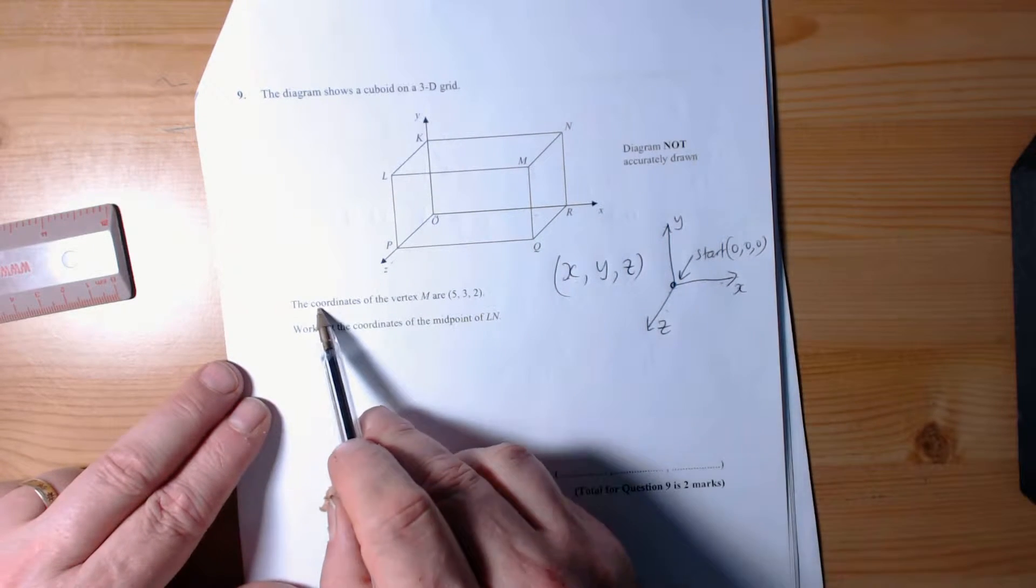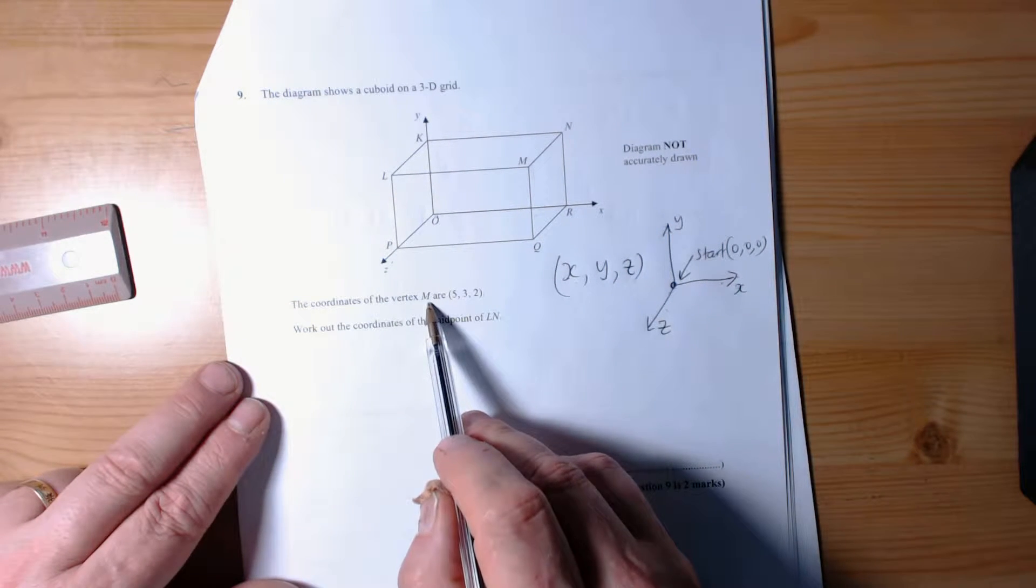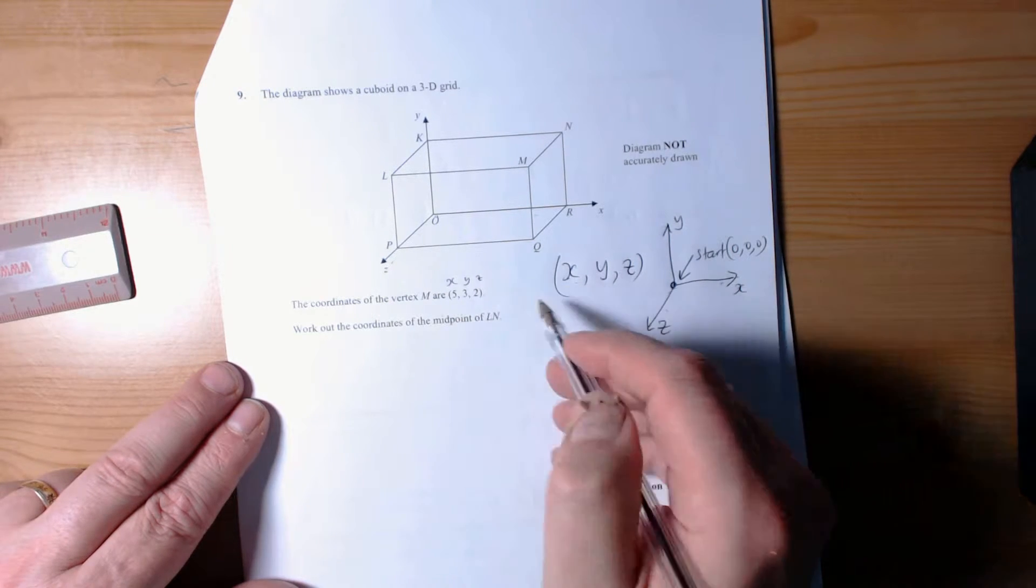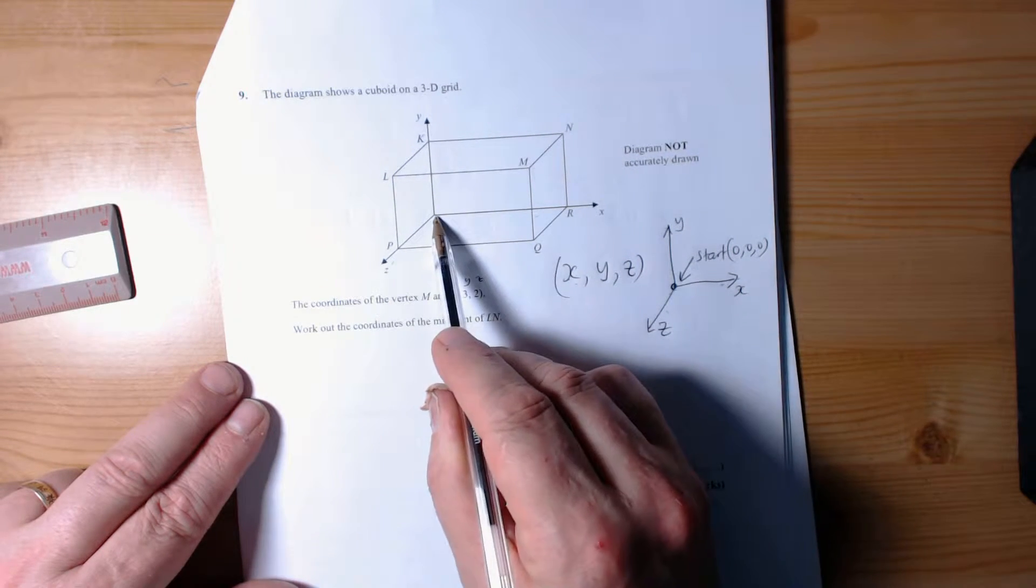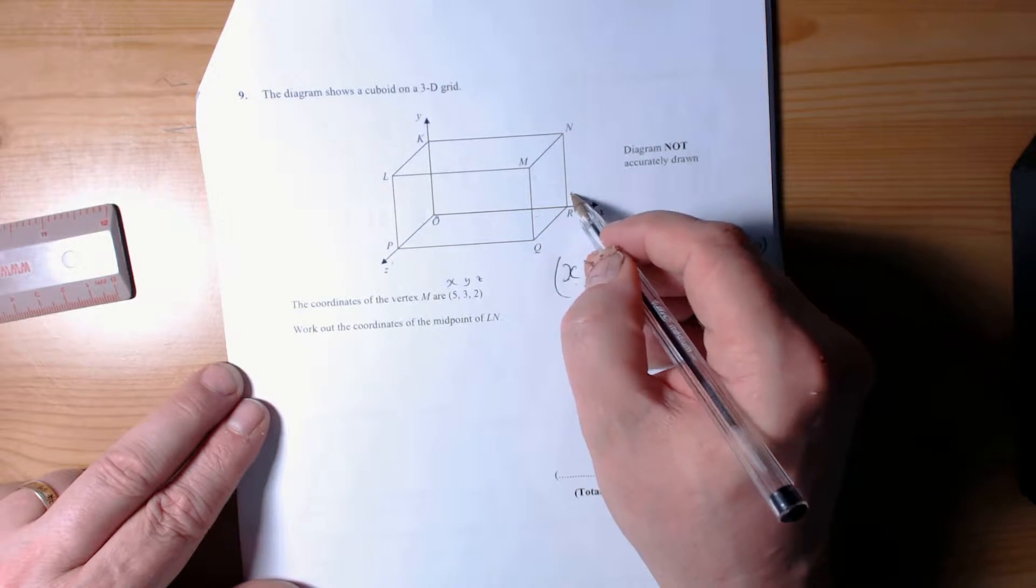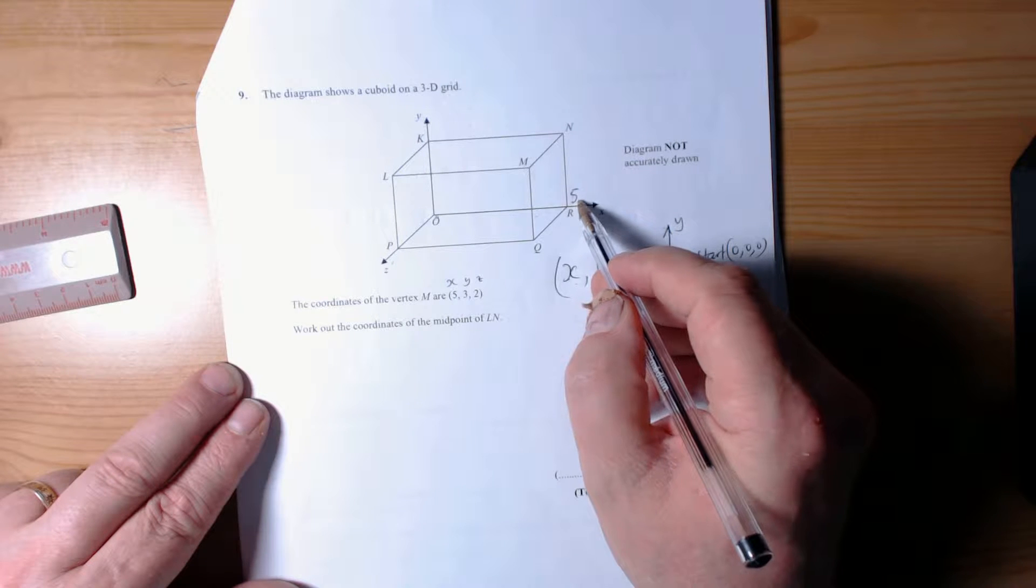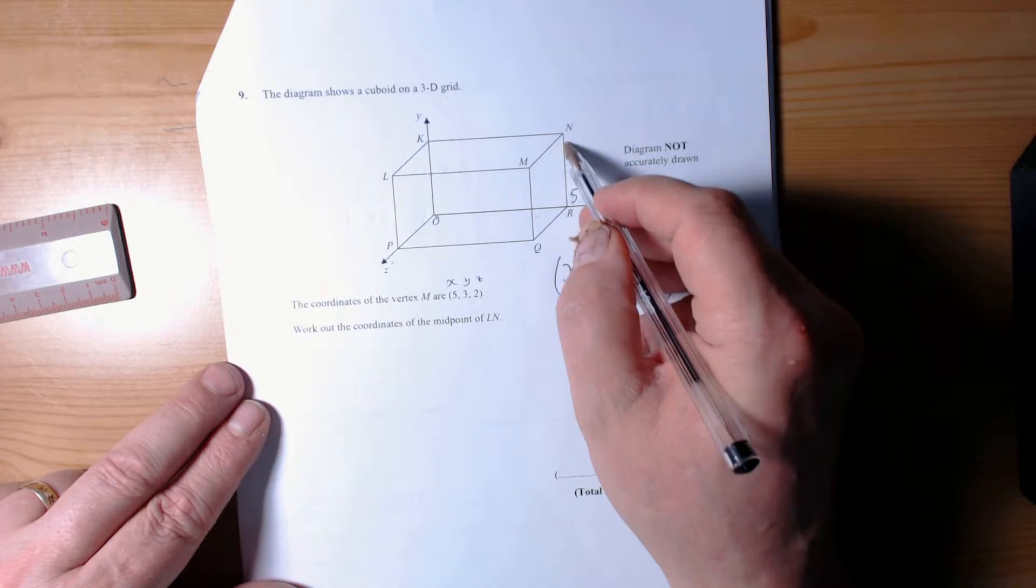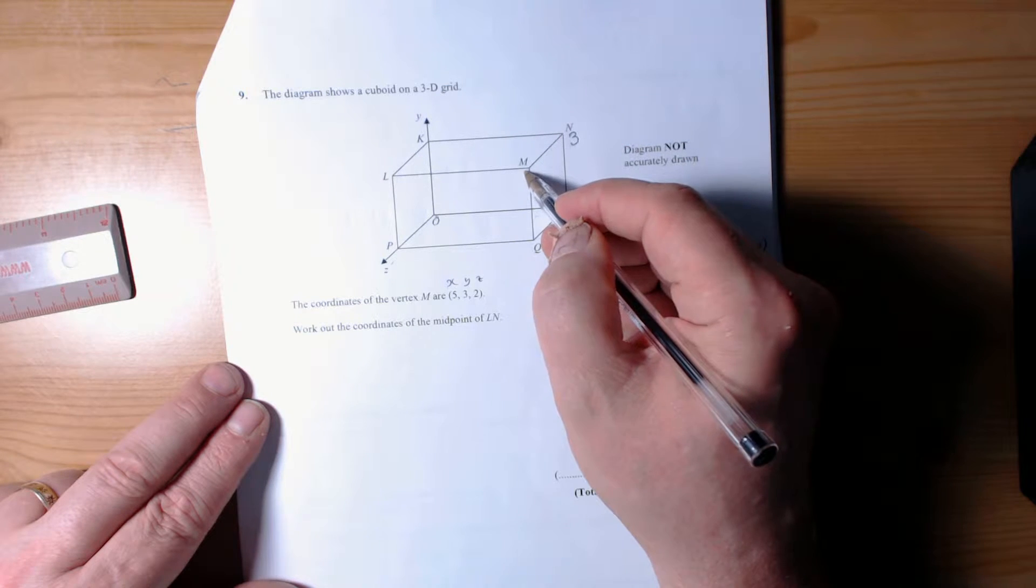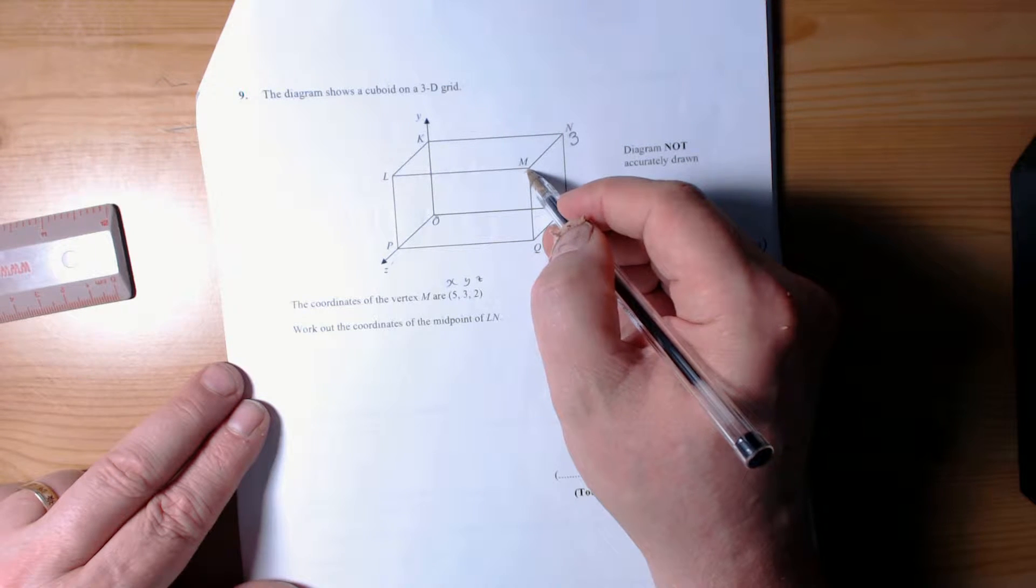Let's have a look at the coordinates of vertex M, which is (5,3,2) - so x, y, and z. If we start at the center to get to M, we follow the outside of the box. This must have been 5 for the x, then the y tells us to go to the top of the box, which is 3, and then we've come to the front of the box, which is following the z direction.